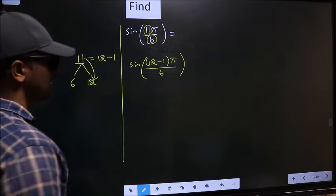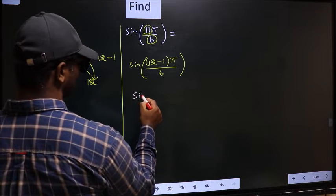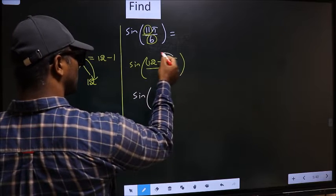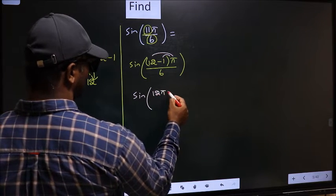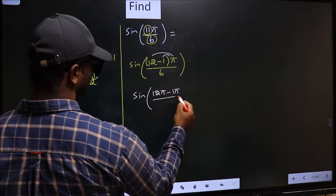Next, sine of. Now you should open up the brackets. So you get 12π minus 1π by 6.